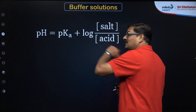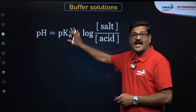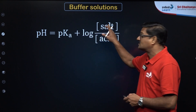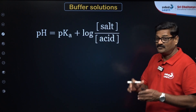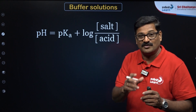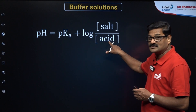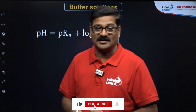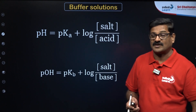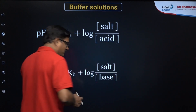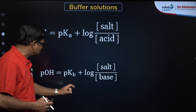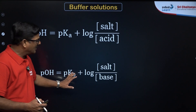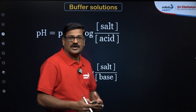You can calculate the pH of a buffer using the Henderson-Hasselbalch equation: pH = pKa + log(salt concentration / acid concentration). This is used for weak acid buffers, where Ka is the acid dissociation constant. The Henderson-Hasselbalch equation for a basic buffer is: pOH = pKb + log(salt / base), where pKb is the negative logarithm to base 10 of the Kb value.